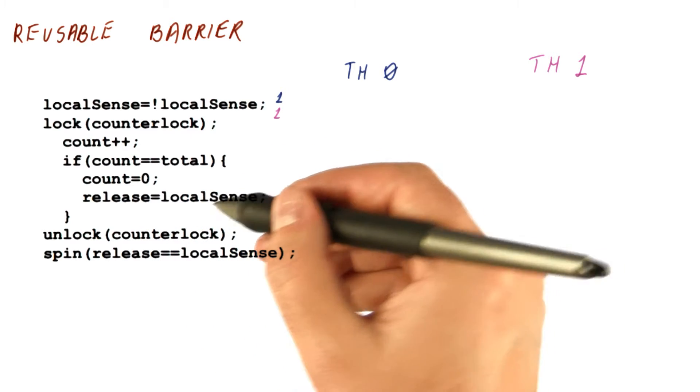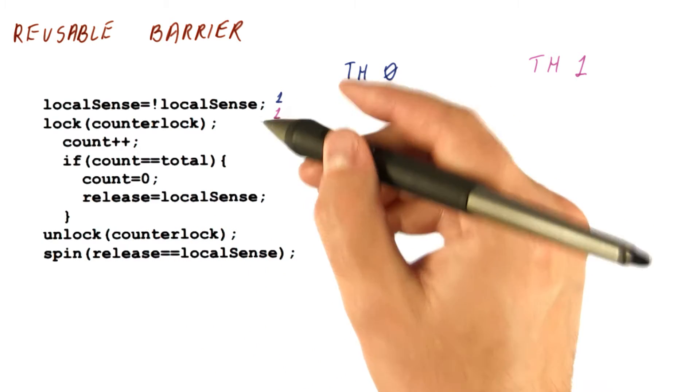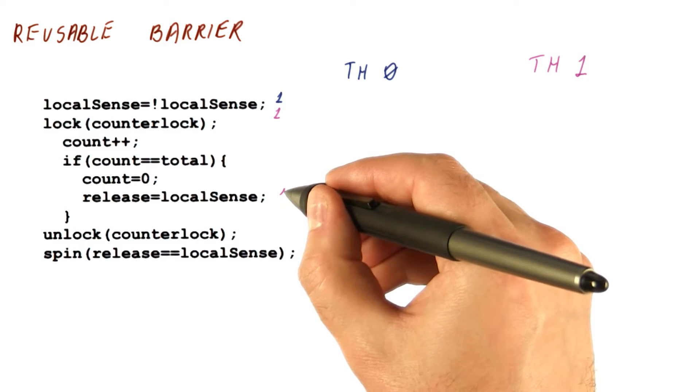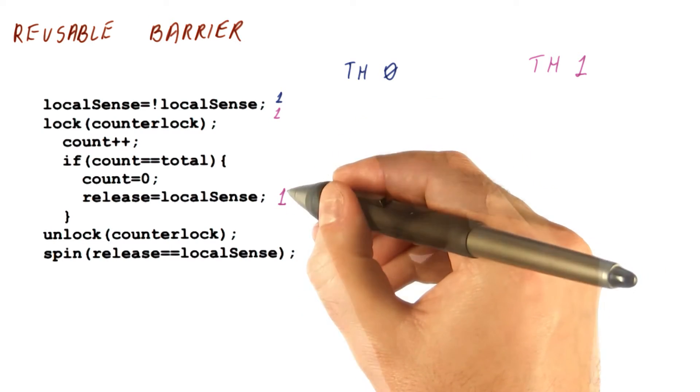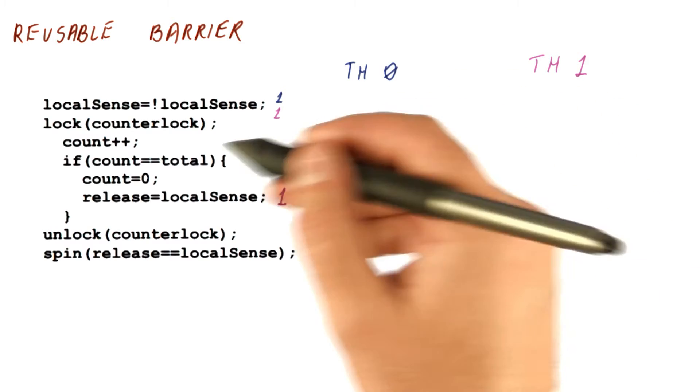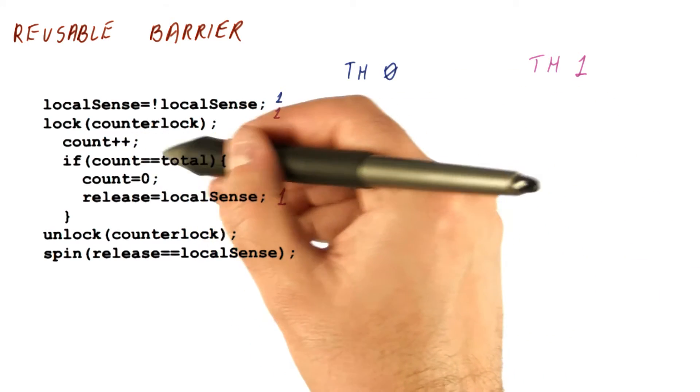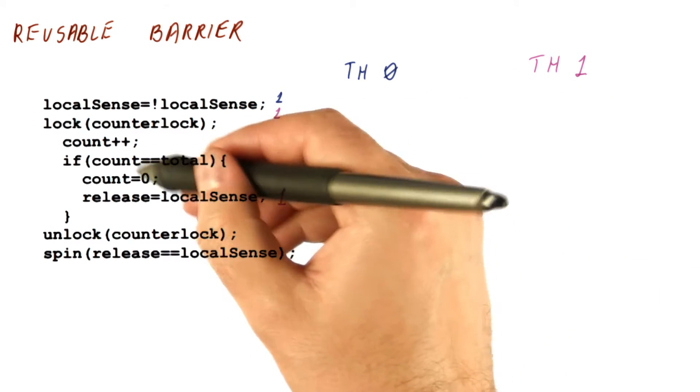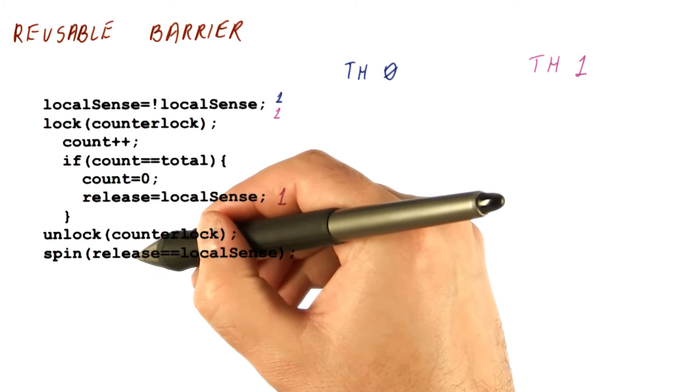So it sets the release to what we are waiting for. In this case, let's say thread one releases it to one. That means that thread zero, when it incremented the count, didn't see the total at two, it saw it at one, and proceeded to exit here.